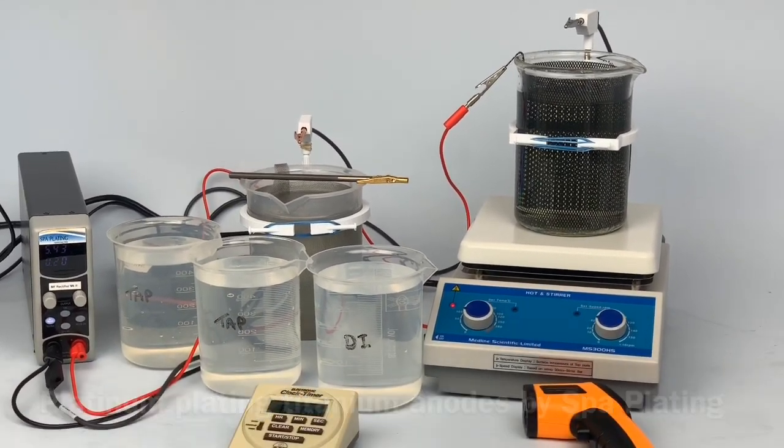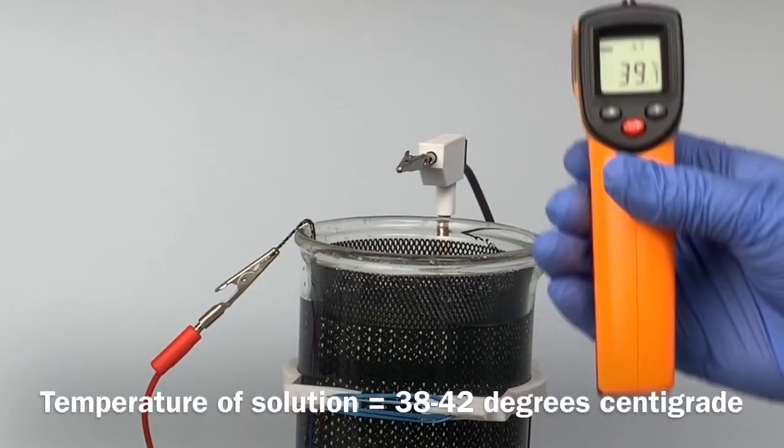Before you start, check the temperature of the platinum tank plating solution is within its operating range of 38 to 42 degrees centigrade with your temperature probe.